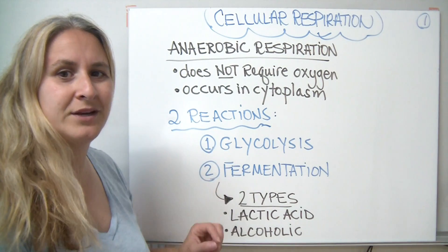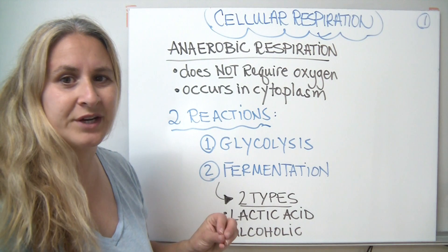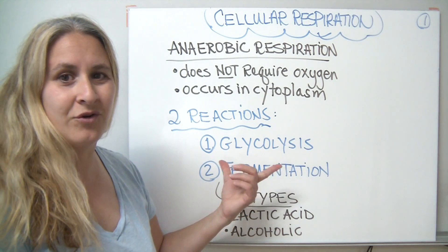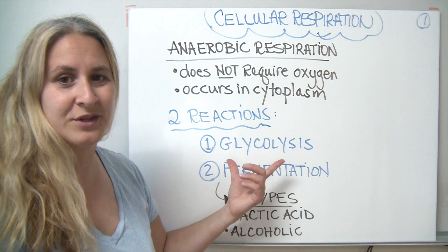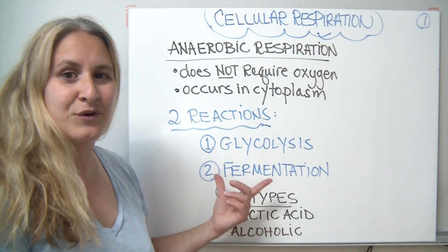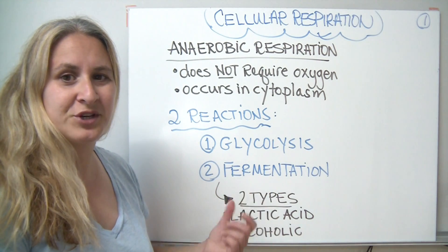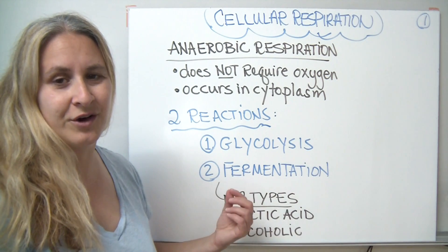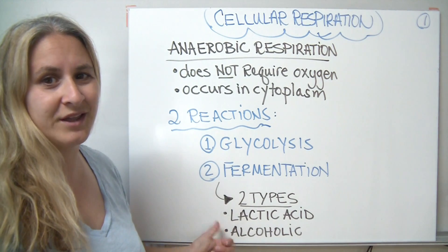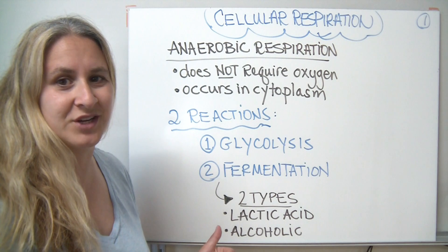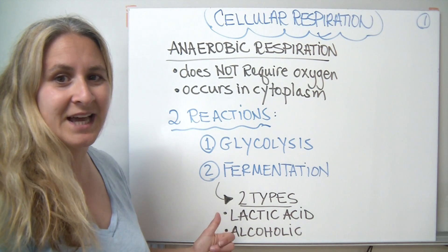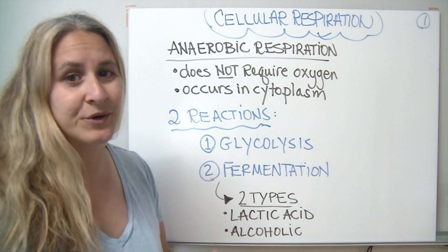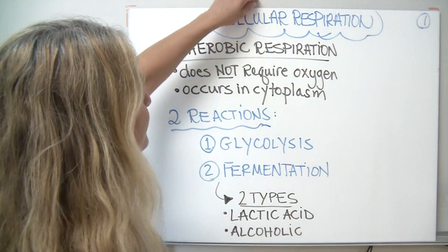There are two main reactions that occur during anaerobic respiration. All of cellular respiration starts with glycolysis, and for anaerobic respiration we add on a second reaction which we'll generically call fermentation. There are two types of fermentation: lactic acid fermentation and alcoholic fermentation. We're going to go through the details of those now.